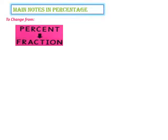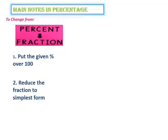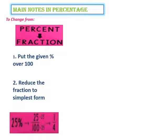Main notes in percentage. To change it from percent to fraction, we put the given percentage over 100, then we reduce the fraction to simplest form. For example, we have 25%. We write 25 over 100. Then, we reduce the fraction by dividing the numerator and the denominator by 25. Then, we get an answer equal to 1 over 4, which is in the simplest form.